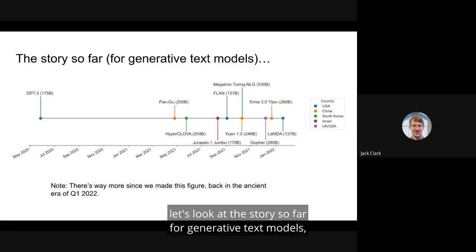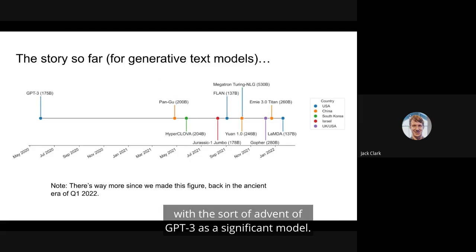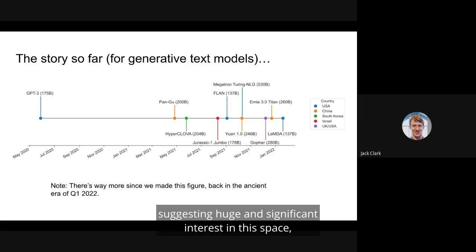To get on the same page, let's look at the story so far for generative text models, which I'm going to define as starting with the advent of GPT-3 as a significant model. This timeline shows the timeline of public replications of GPT-3. We see a few things. First, that the landscape for replication is global, involving companies and entities from China, South Korea, Israel, the UK. But also, it took quite a while for people to replicate it, but then after the first paper was published, there was a rapid series of replications, suggesting huge and significant interest in this space.